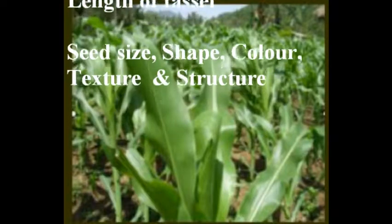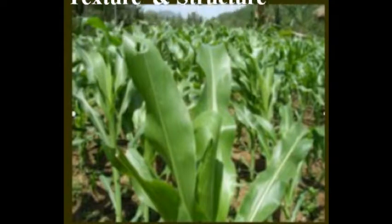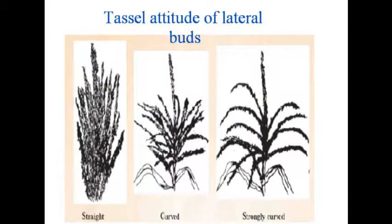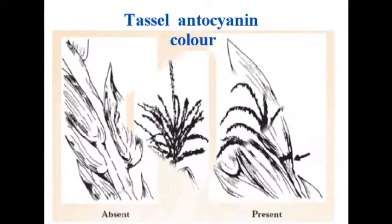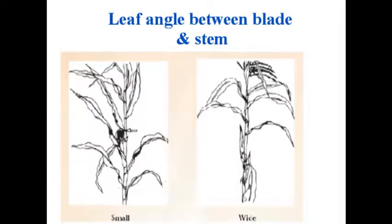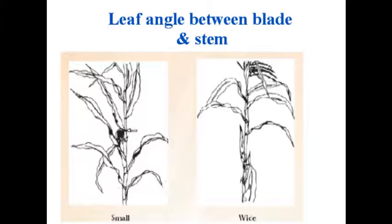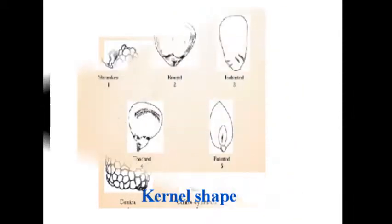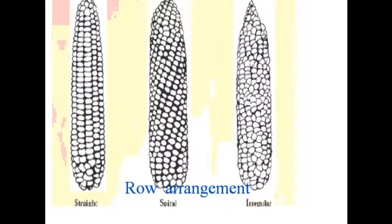Let us see some morphological characters for maize cultivar identification. The first one is tassel attitude of lateral branches, tassel anthocyanin color, leaf angle between blade and stem, ear shape, kernel shape, and row arrangement.